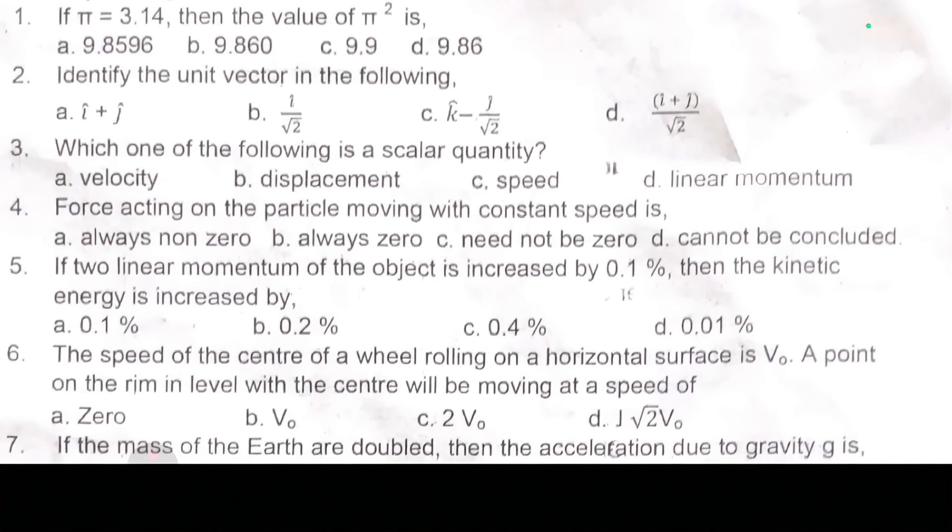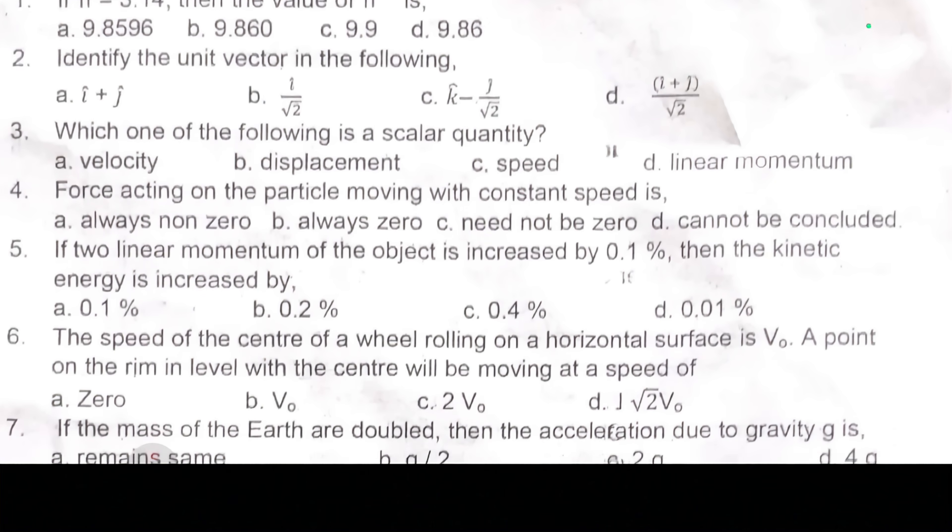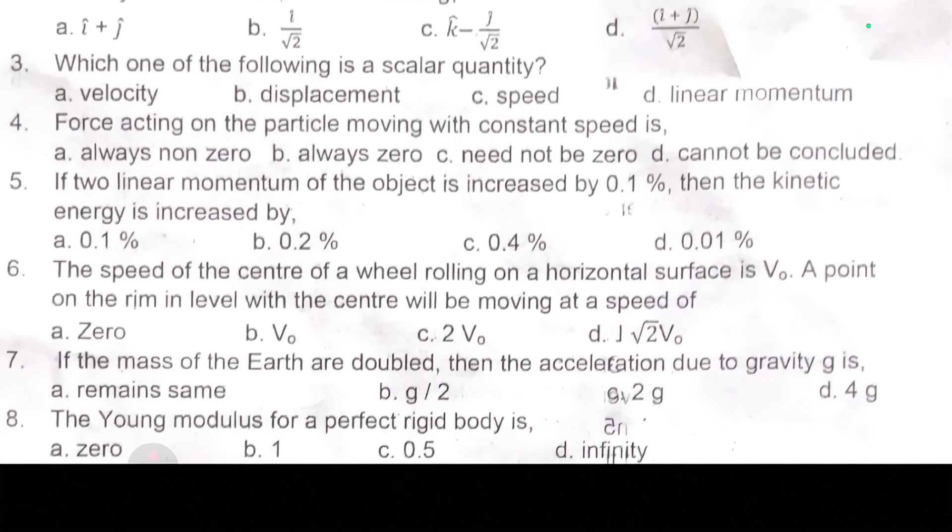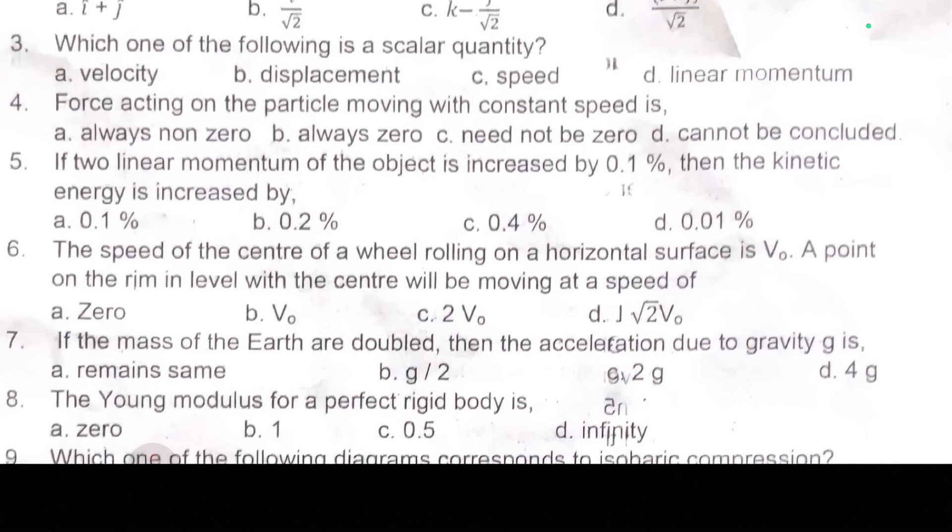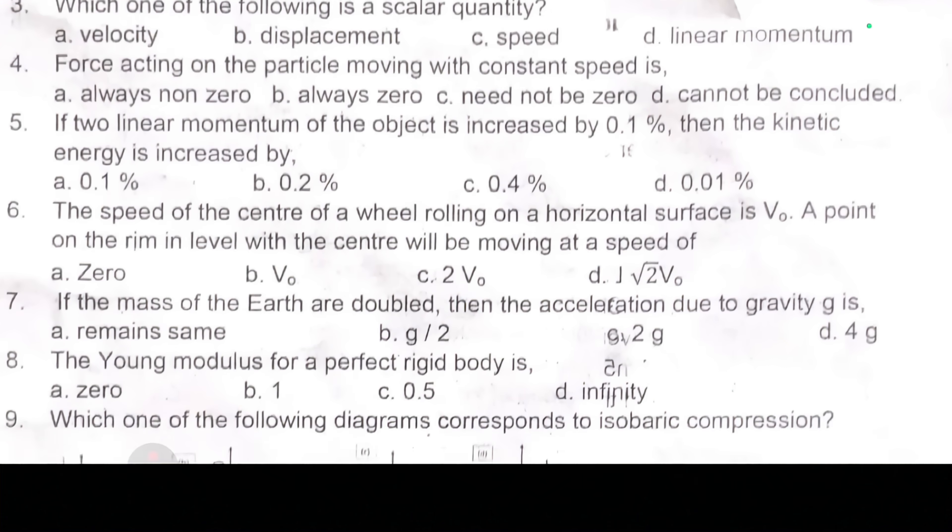Fifth one, if two linear momentum of the object is increased by 0.1 percentage, then the kinetic energy is increased by dash. Sixth one, the speed of the center of a wheel rolling on a horizontal surface is V0. A point on the rim in level with the center will be moving at speed of dash.